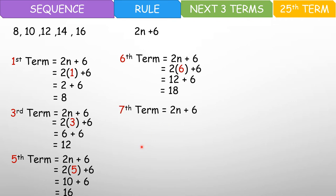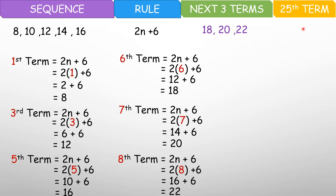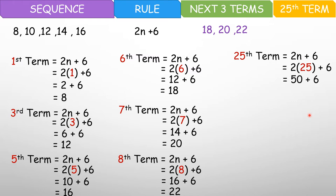Hanap natin is the 6th, the 7th, and the 8th. So 6th — palitan ulit natin ito. You have 12 plus 6, that is 18. Seventh term — you have 2n plus 6. That would be 2 times 7 plus 6, and that is 14 plus 6, and that is 20. Now eighth term is 2n plus 6. So 2 times 8 plus 6, and that would be 22. So tignan natin — skip count tayo: 8, 10, 12, 14, 16, 18, 20, 22. Tama. So the 25th term: 2 times 25 plus 6 — 50 plus 6 — sagot natin is 56. And you have the 25th term.